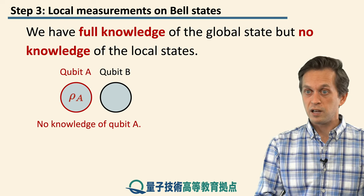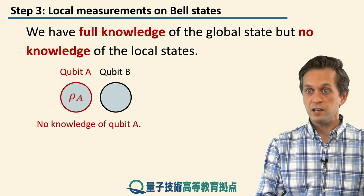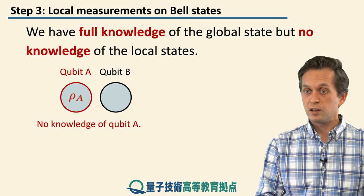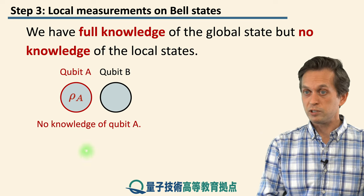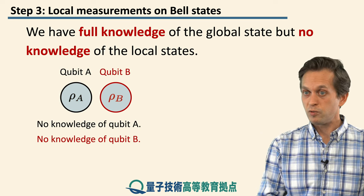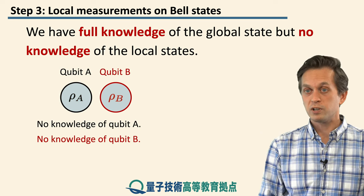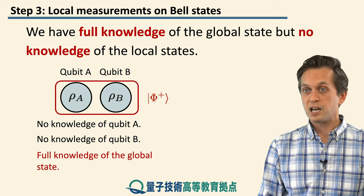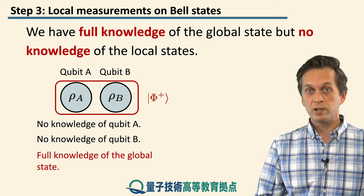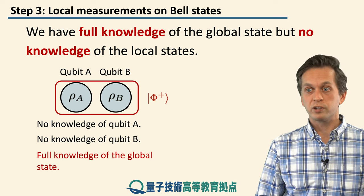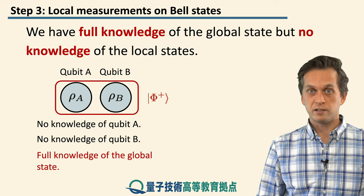Just to stress how strange this is: qubit A is a maximally mixed state — we have no knowledge. Qubit B, no knowledge either. Yet somehow, when we look at the state globally, we have perfect knowledge of the entire state. We have full knowledge of the global state, yet zero knowledge of the local states.